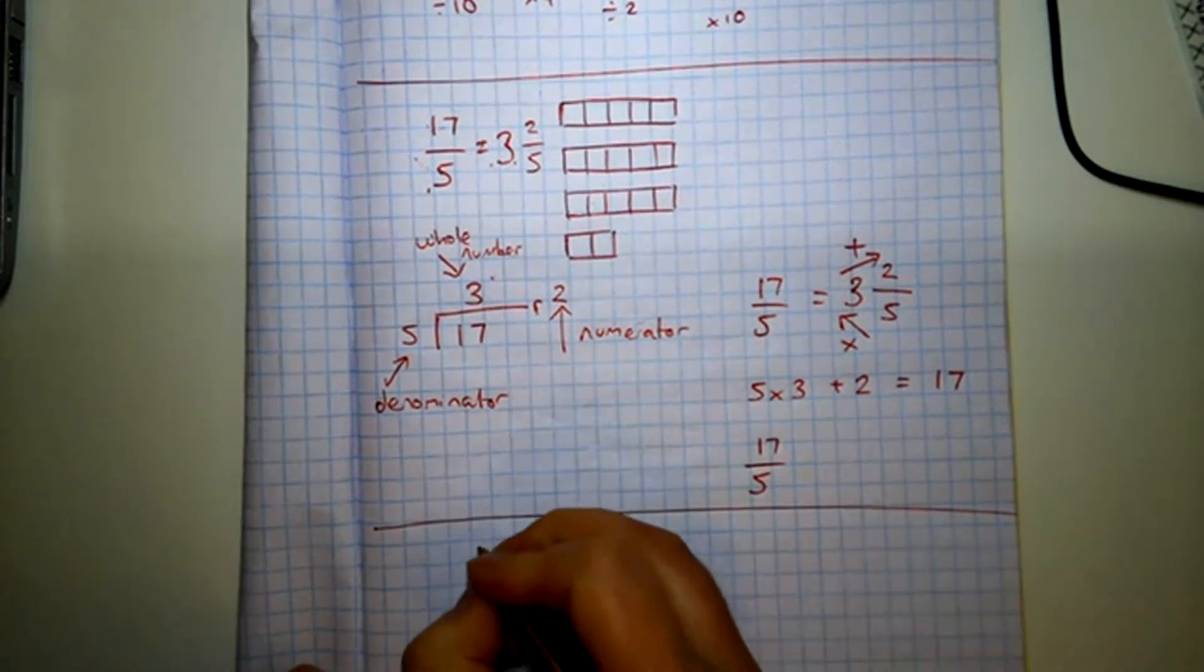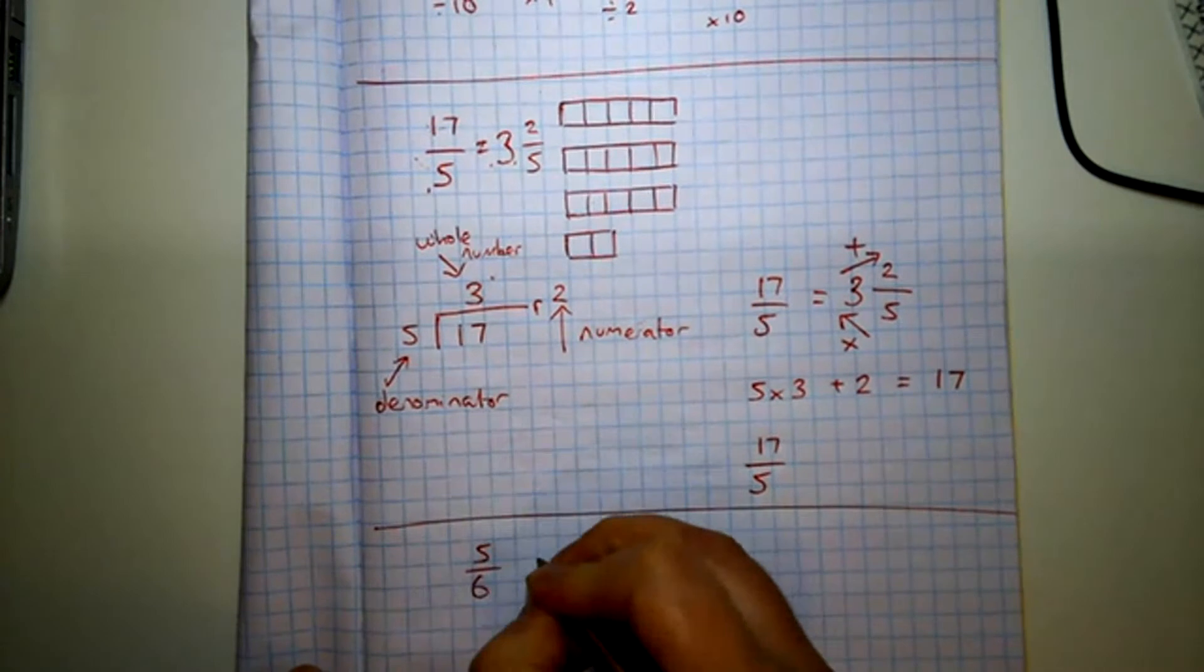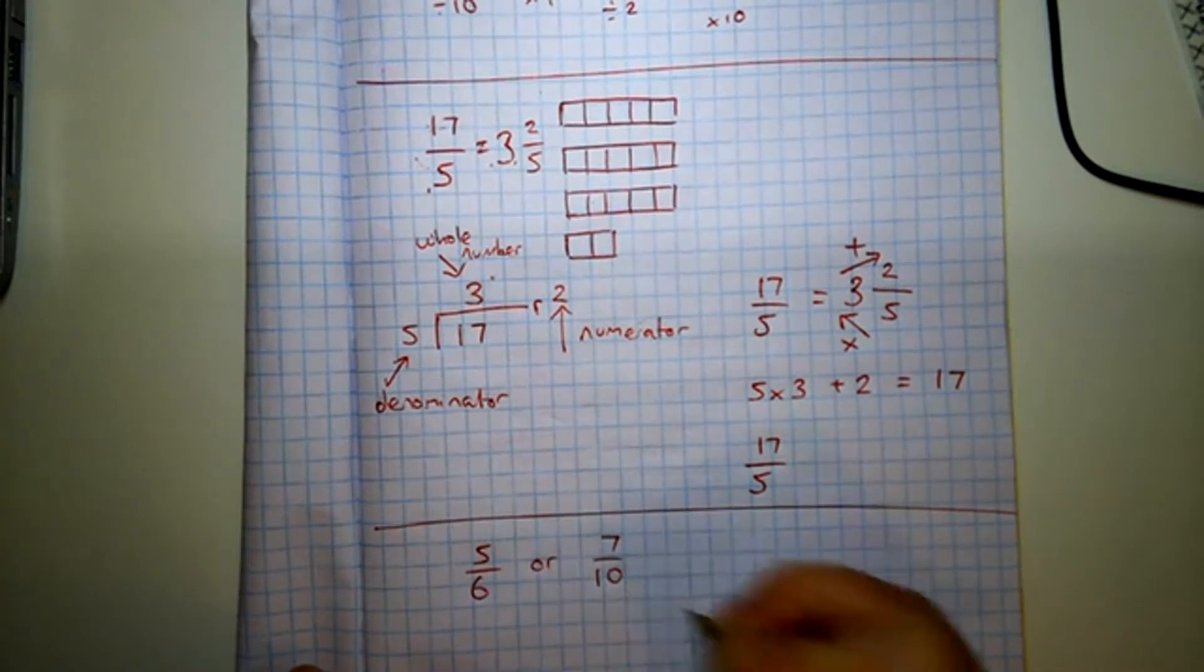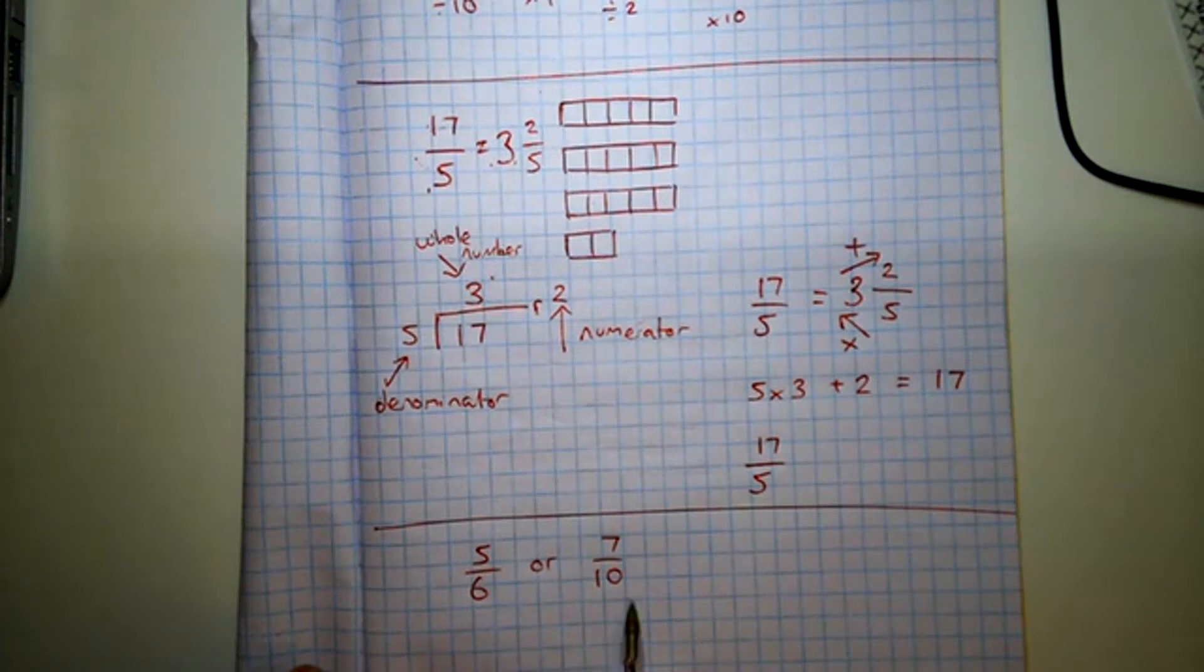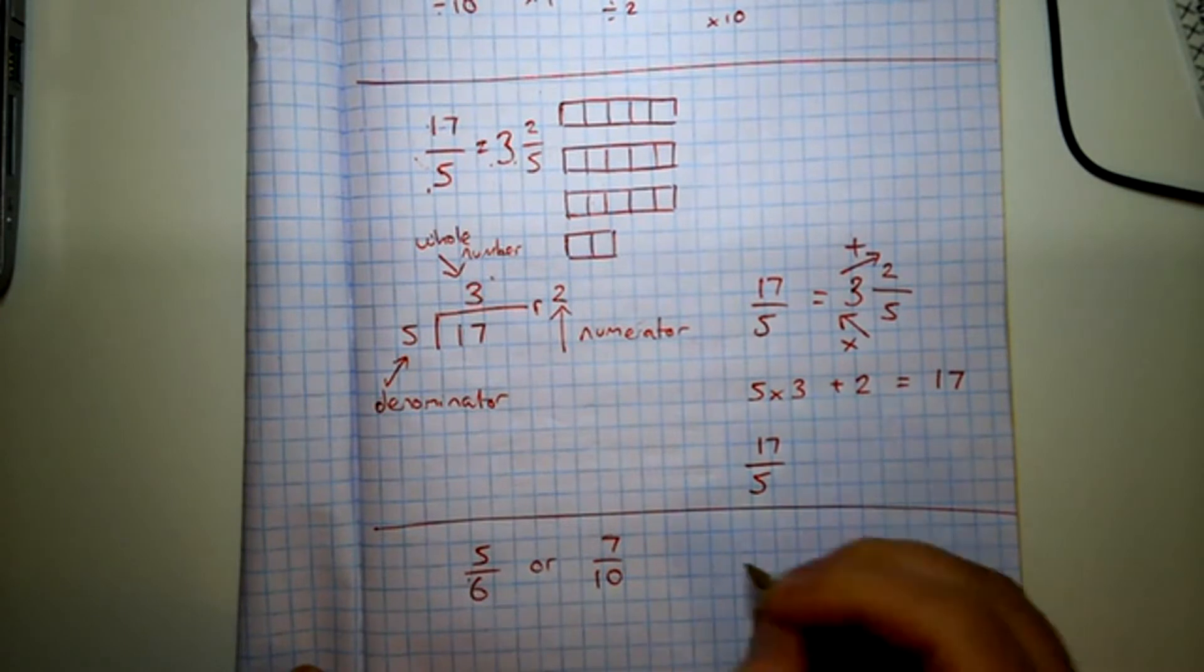And the last thing I'm going to look at today is, which is bigger, five sixths or seven tenths. And in order to figure it out, because even though this seems like, well, it's all but one, seven, this is more pieces, which is more. And the only way to tell for sure is to find equivalent fractions.